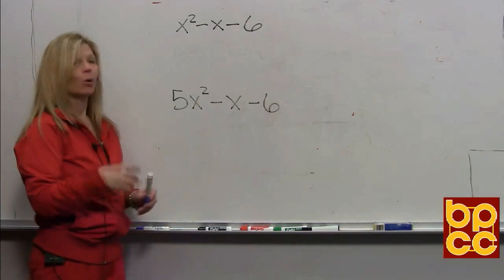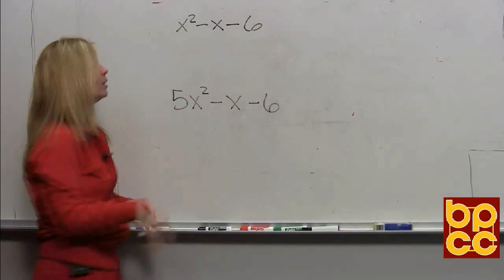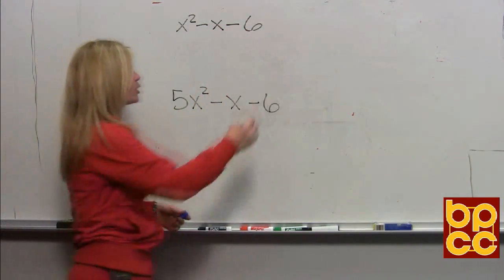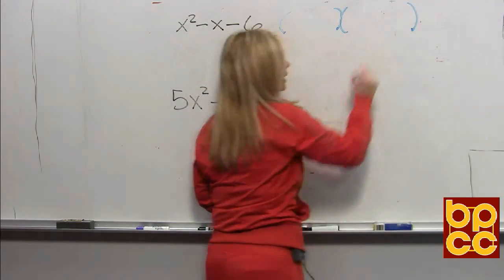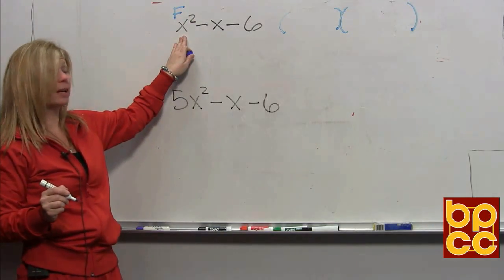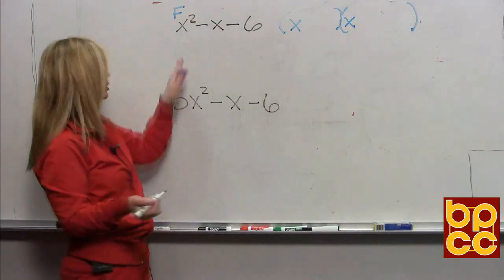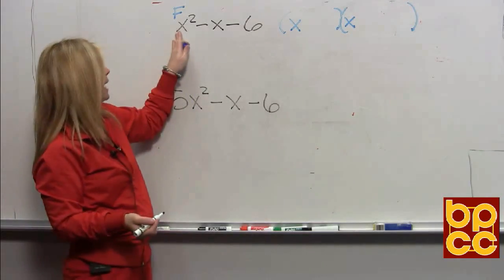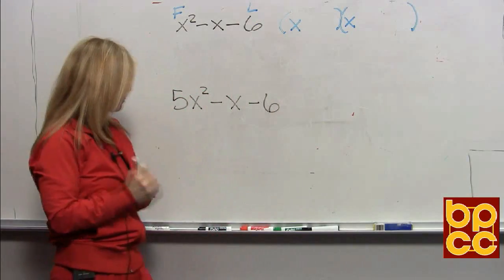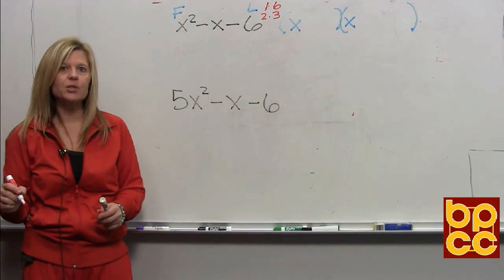Let's recall. Last time we left off, we were factoring trinomial expressions — three terms — and we said they had to be in descending order. So if I have x squared minus x minus six, that's a trinomial in descending order. We said it will always factor into two parentheses. Now the pattern to factor is always the same. We start with the first term. What's the only thing that can multiply to x squared? x times x.